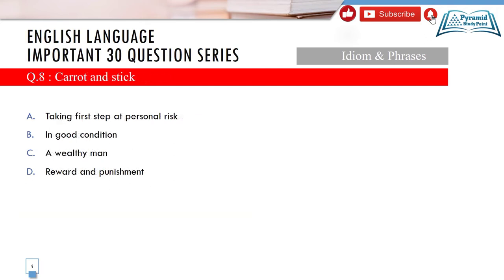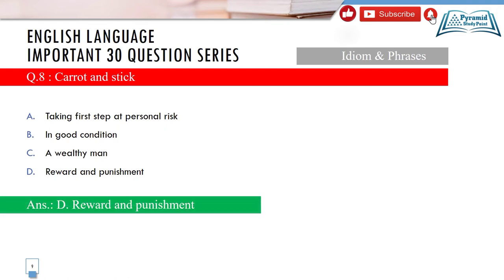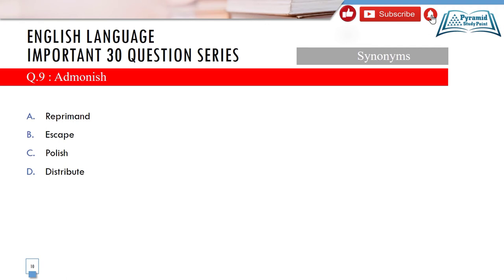Question 8: The idiom is 'carrot and stick.' Options: A) good condition, B) idiom-related, C) a wealthy man, D) reward and punishment. The correct answer is option D — reward and punishment. Carrot represents reward and stick represents punishment.